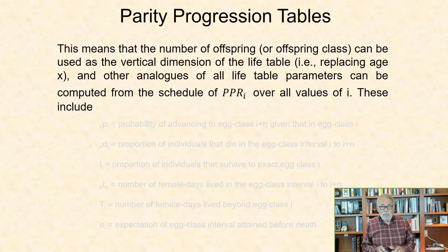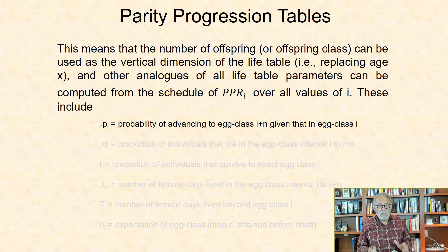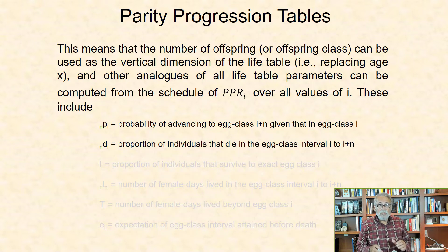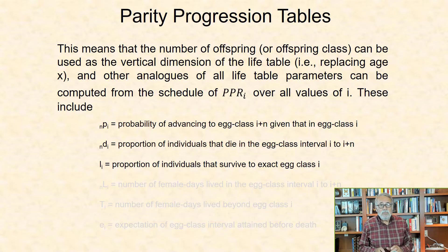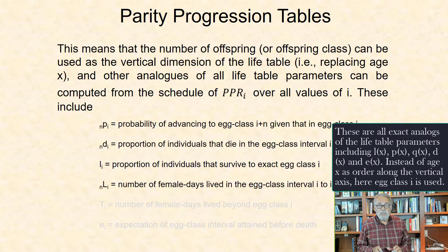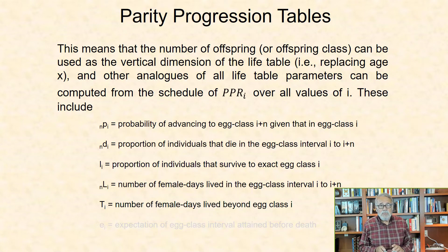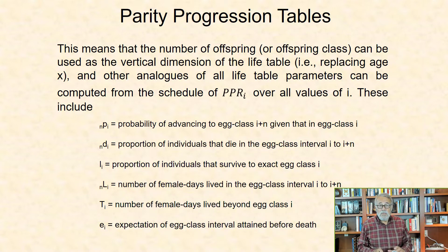Other analogs of all life table parameters can be computed from the schedule of PPR i over all values of i. These include: NPI, the probability of advancing to egg class i plus n given that an individual is currently in egg class i; NDI, the proportion of individuals that die in the egg class interval i to i plus n; L sub i, the proportion of individuals that survive to exact age class i; NLI, the number of female days lived in the egg class interval i to i plus n; TI, the number of female days lived beyond egg class i; and EI, the expectation of egg class interval attained before death.